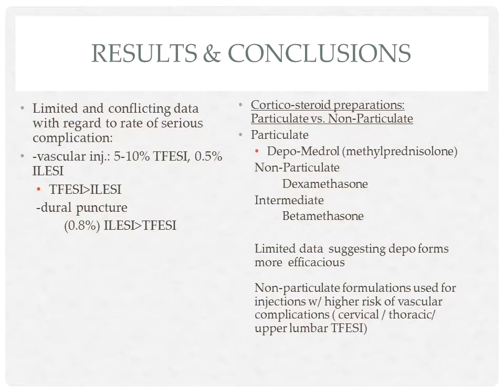There is limited and conflicting data regarding the rates of major complications such as vascular injuries and dural puncture. However, it appears that the rate of vascular injury is higher for a transforaminal compared to an interlaminar approach. This is likely due to the anatomy and the presence of the radicular artery within the neuroforamen; however, these complications are still considered fairly low.